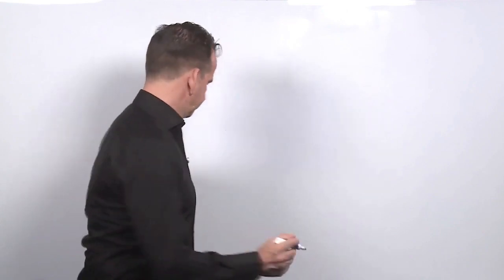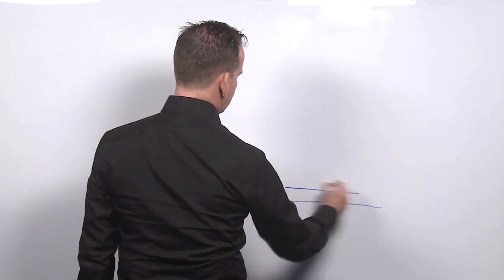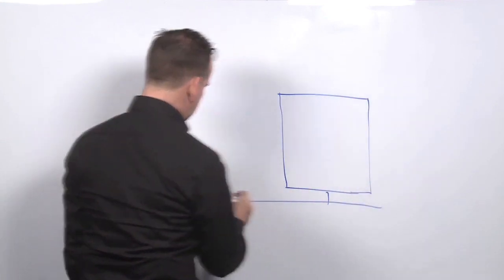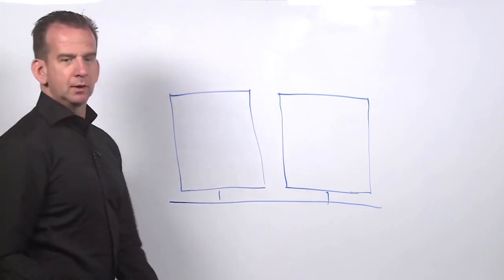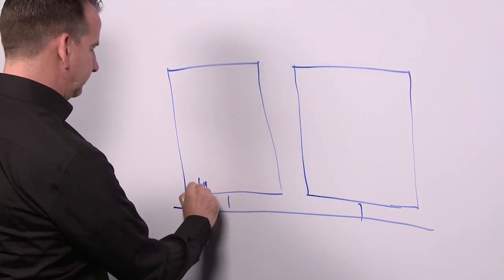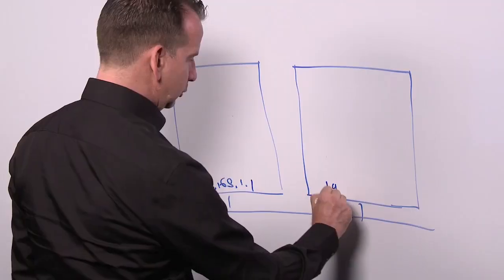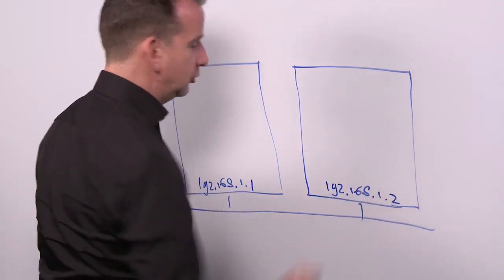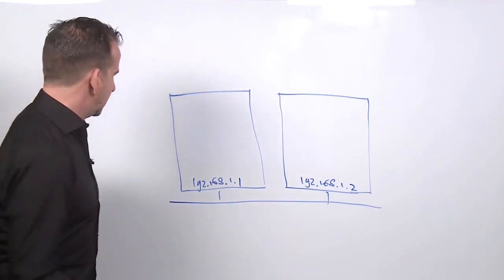Let me draw a quick overview of Kubernetes networking on the whiteboard. Let's say we have a public network, and on the public network we have two worker nodes. The worker nodes have their own network — let's say 192.168.1.1 and 192.168.1.2. These IP addresses make it possible for the nodes to communicate to one another.